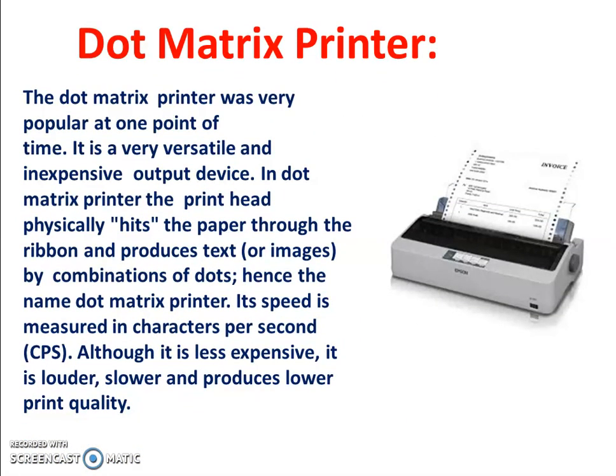Dot matrix printer: the dot matrix printer was very popular at one point in time. It is a very fast and inexpensive output device. In a dot matrix printer, the print head physically hits the paper through a ribbon and produces text or images by a combination of dots — hence the name dot matrix printer. Its speed is measured in characters per second, or CPS. Although it is less expensive, it is louder, slower, and produces lower print quality.